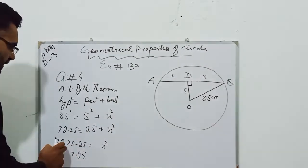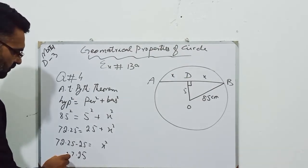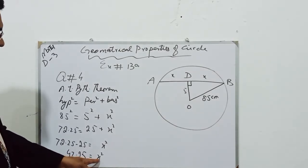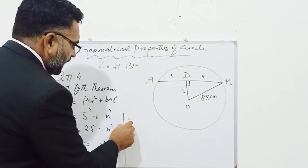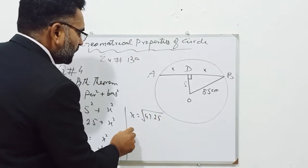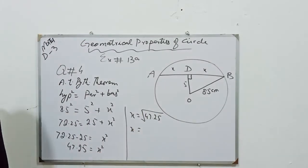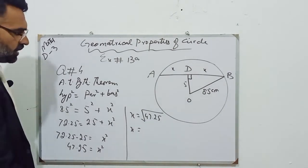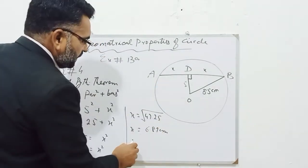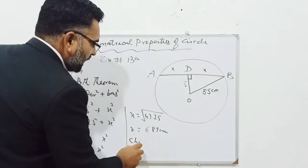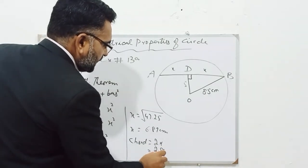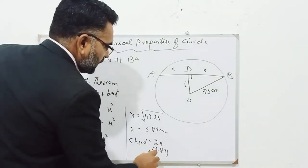72.25 minus 25 equals 47.25, and that is equal to x square. Now we have to find the value of x, so we will take square root on both sides, and the value of x will become the square root of 47.25. Use your calculator to find the value, and the answer will be 6.87 centimeters. So the chord will be equal to 2x, that is 2 into 6.87.